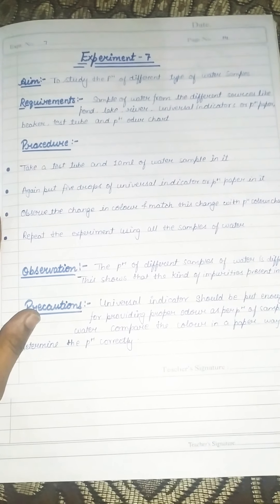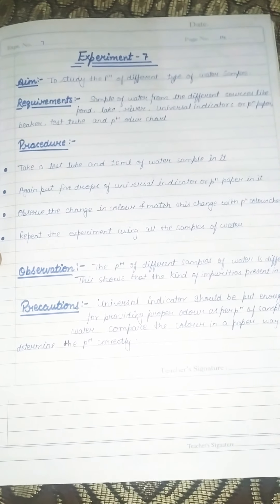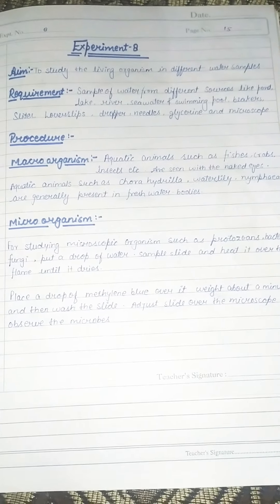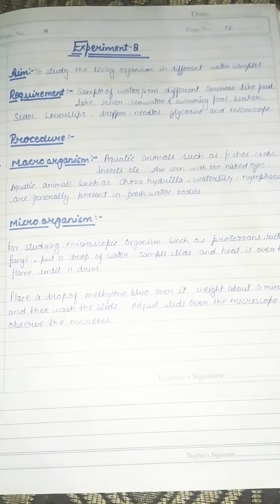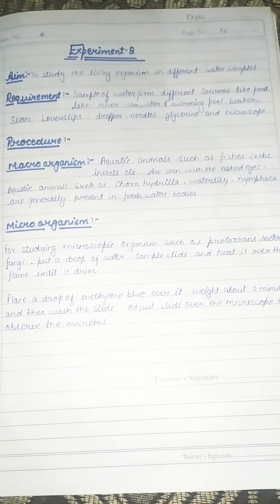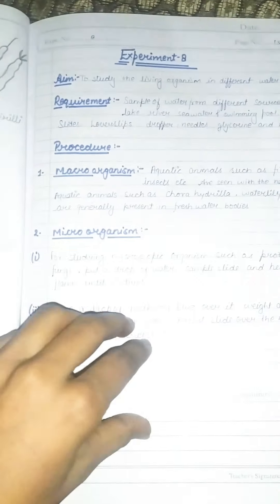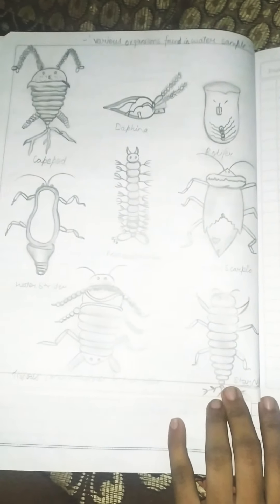Experiment 7 is to study the quality of different types of water samples, with a problem statement. Experiment 8 is to study the living organisms in different water samples — here is the data, observation, and conclusion.